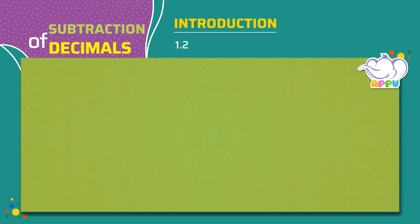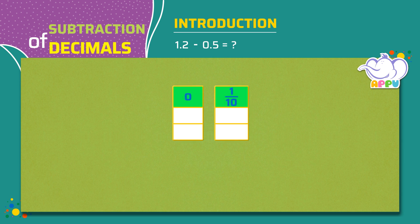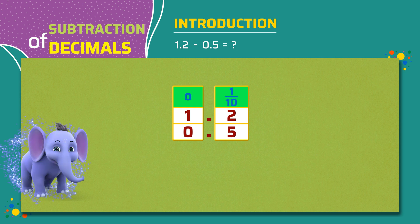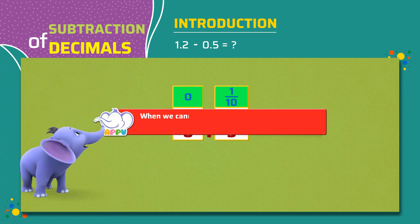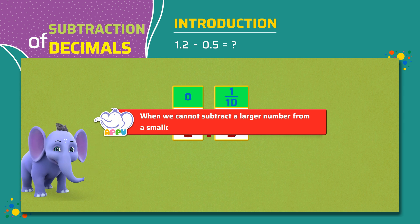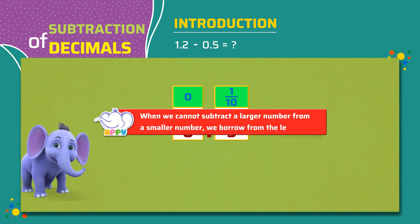What is 1.2 minus 0.5? We write the numbers in the place value chart. We write 1.2 as 1 ones and 2 tenths, and 0.5 as 0 ones and 5 tenths. When we cannot subtract a larger number from a smaller number, we borrow from the left column.